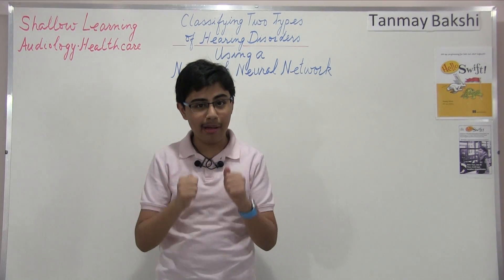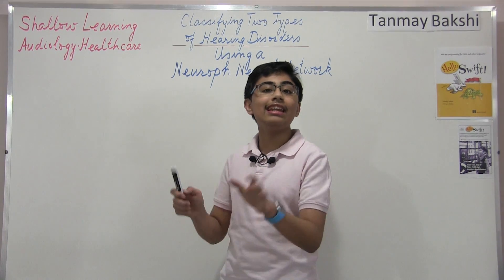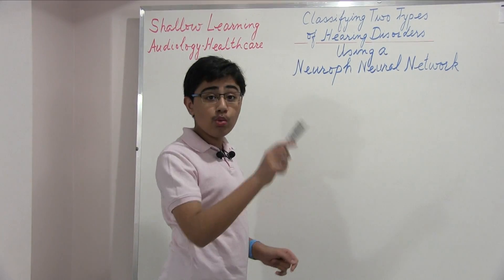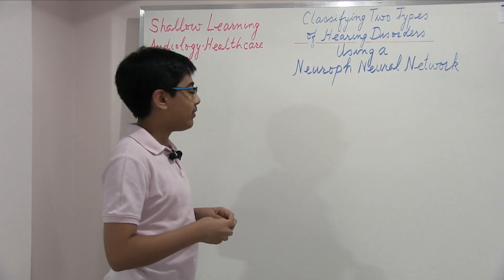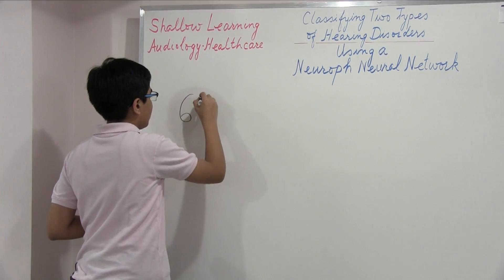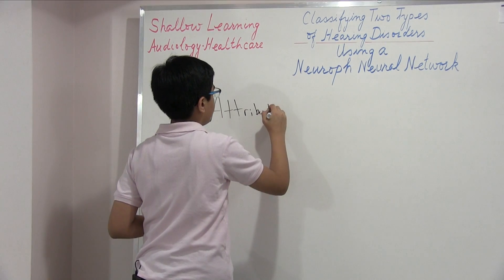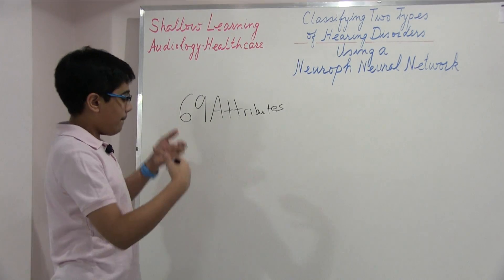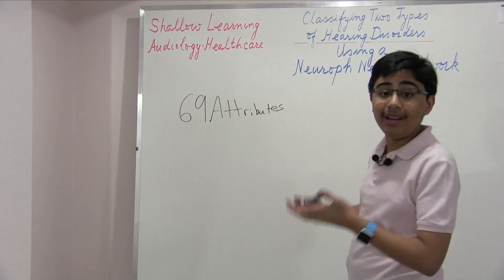The dataset that I'm going to be using was actually donated in 1992, and it contains around 200 different rows of training data. There are 69 input attributes about the people in this dataset — 69 training attributes. The neural network is fed those 69 attributes about the person who is going to be classified.